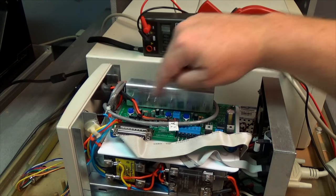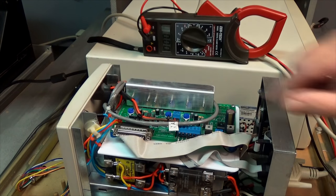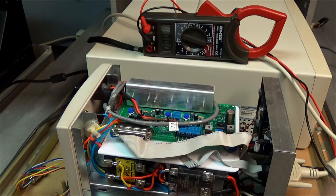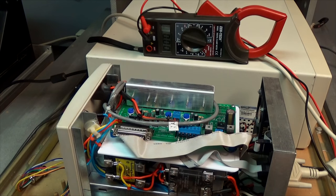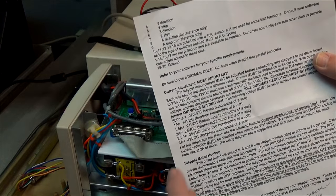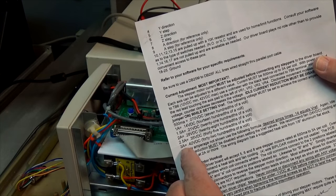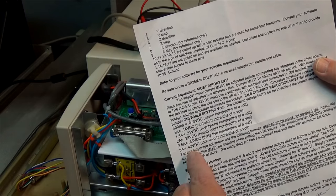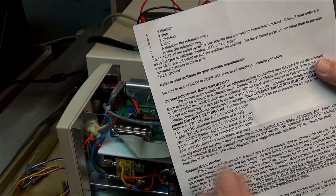The way that you do it is there are three trim pots. One, two, and three. X, Y, and Z. And they're labeled. You turn those to change the maximum current that each of the three can deliver. And this is a three amp max stepper motor in my case. And it's suggested for a three amp maximum to set the voltage to .42 volts DC.